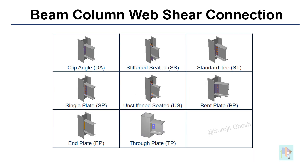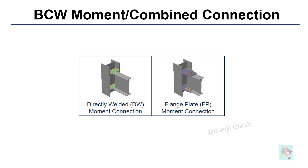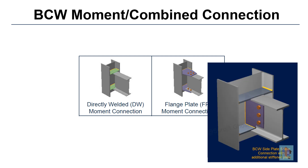Similarly, for beam-to-column web connections, different templates are available for shear connections like side plate and clip angle. If there is any gap between the beam and column web, or the beam section is wider than the column, additional stiffener plates are used during connection design.